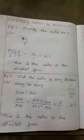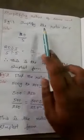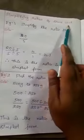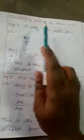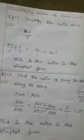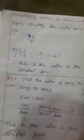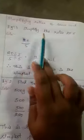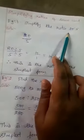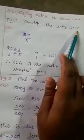Next, simplifying ratios of the same unit. We have to simplify the ratio 20 is to 5.